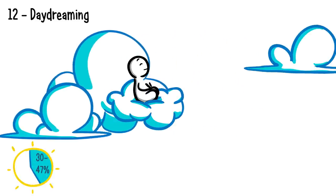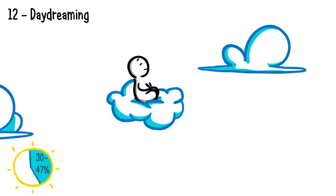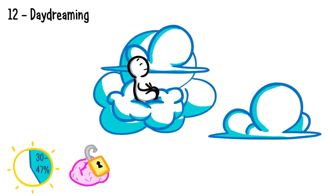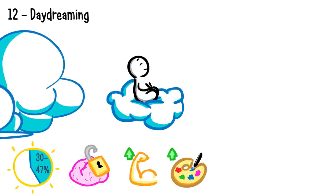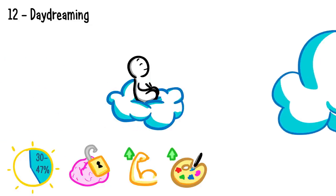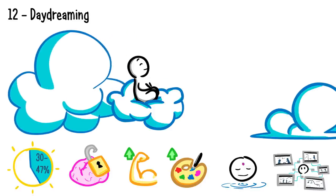Fact number twelve: daydreaming. Did you know you can daydream 30 to 47 percent of your day? Why do you do this? Well, it allows your brain to wander freely. Research suggests that daydreaming increases productivity and boosts creativity. Scientists think daydreaming also allows you to understand your thoughts and help you exercise different scenarios in your brain.